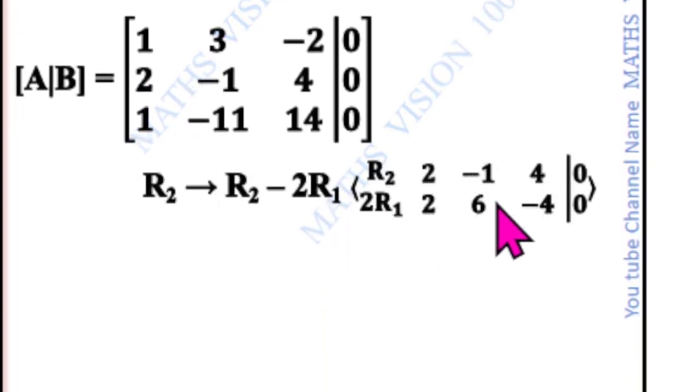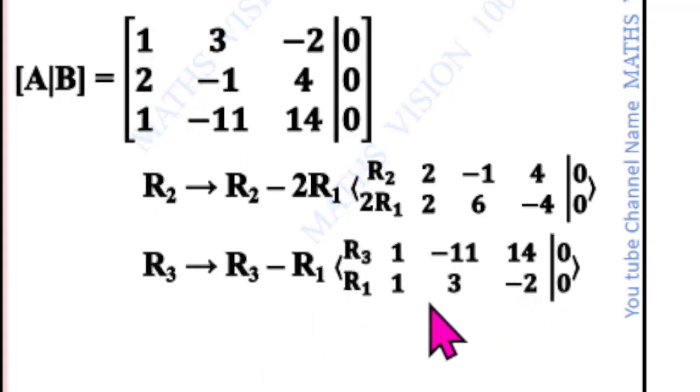R2 becomes R2 minus 2R1: 2 minus 2 is 0, minus 1 minus 6 is minus 7, 4 plus 4 is 8, 0. R3 becomes R3 minus R1: 1 minus 1 is 0, minus 11 minus 3 is minus 14, 14 plus 2 is 16, 0.